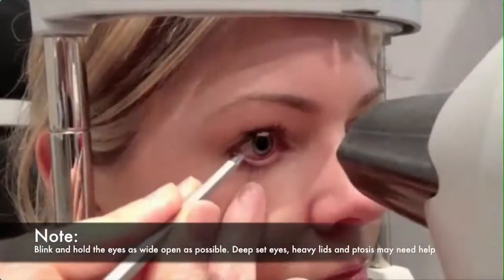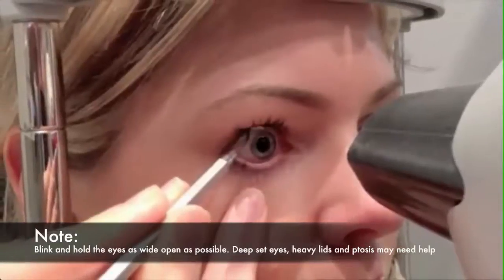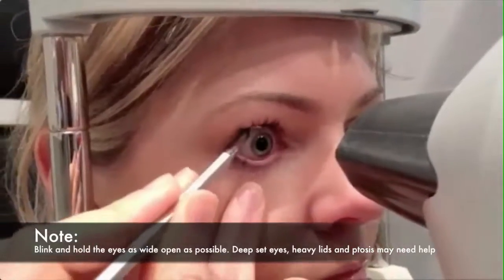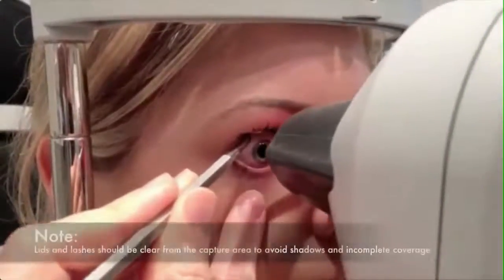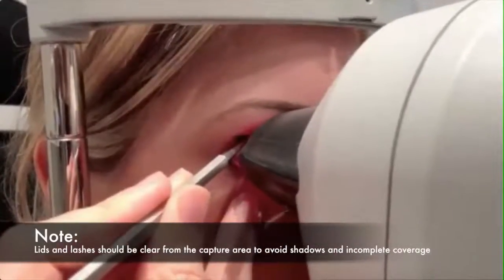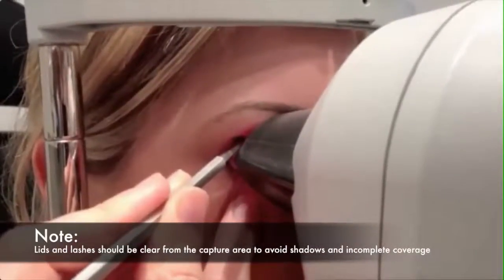It is also important to note that when the cone comes close to the cornea, the lid should be completely out of the way, so as to avoid decreased capture area in shadows of the Placido rings.